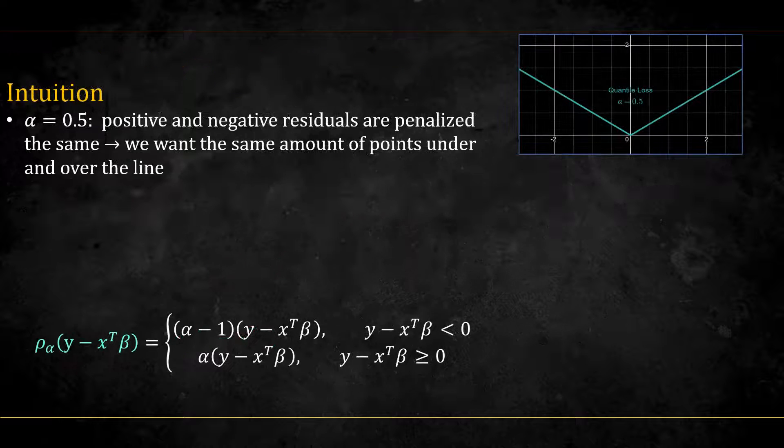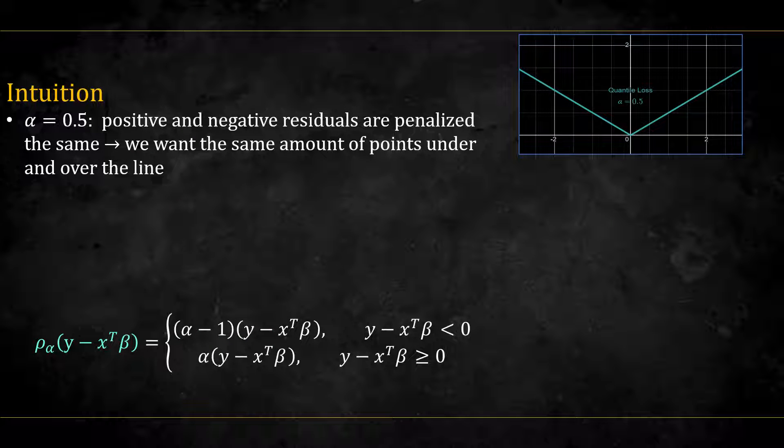Let's try to get some intuition for this quantile loss. When alpha is equal to 0.5, both positive and negative residuals are penalized the same. That is, we want the same amount of points to be under and over the line, which is a definition of the median.